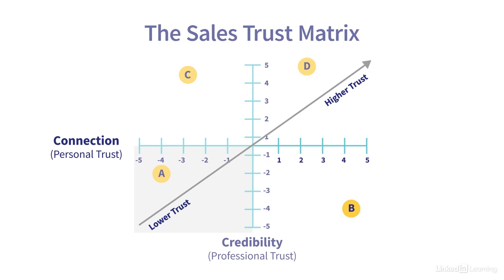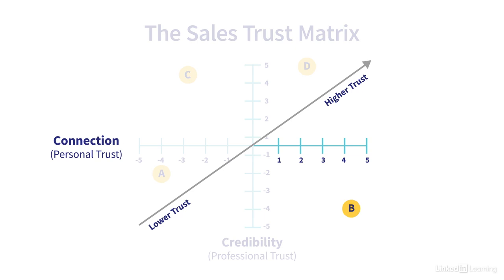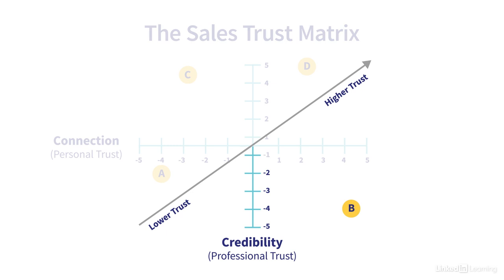Now let's move on to salesperson B. What you should notice about this person is that the customer perceives them as very connecting — they score quite high on the personal trust axis. However, they don't seem to have a high mark for their knowledge, skill, or capability, at least as far as the customer can tell, so they don't perceive them as very credible. This salesperson may be good at asking more personal, relation-oriented questions, but not so good at switching gears into the problem-centric, credibility-oriented questions.